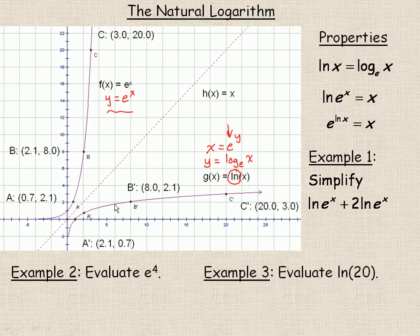So, that's what the ln function looks like. And it's the same shape as any logarithmic function, because it is a log. Now, a couple of properties of logs which transfer over to ln, because ln is a log. First of all, ln x is defined to be logarithm base e of x.